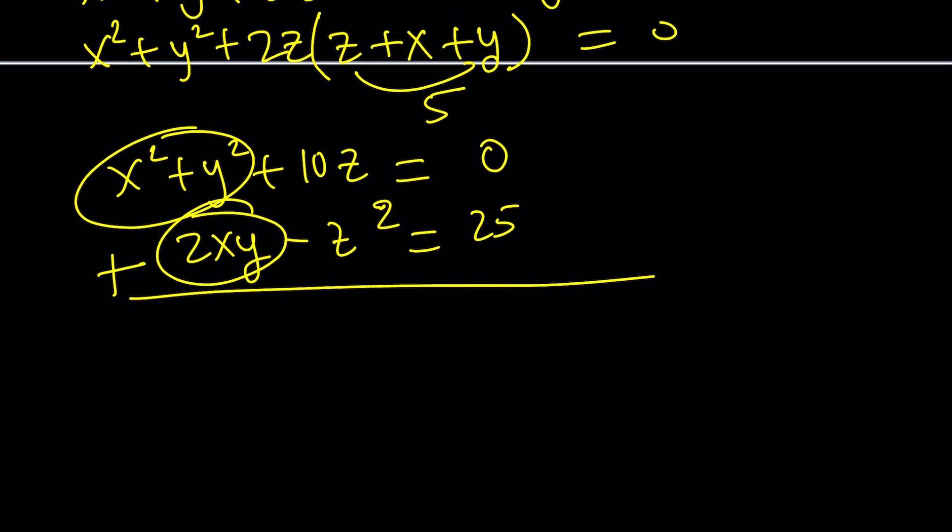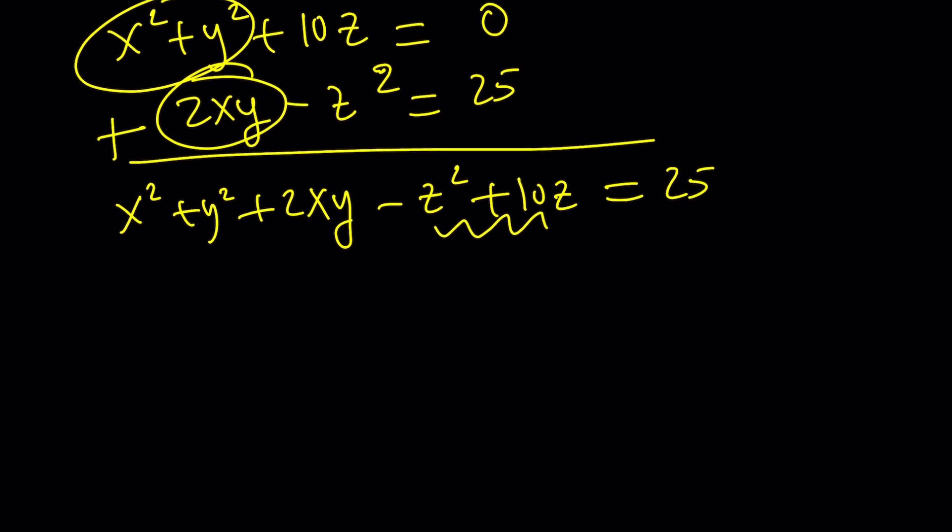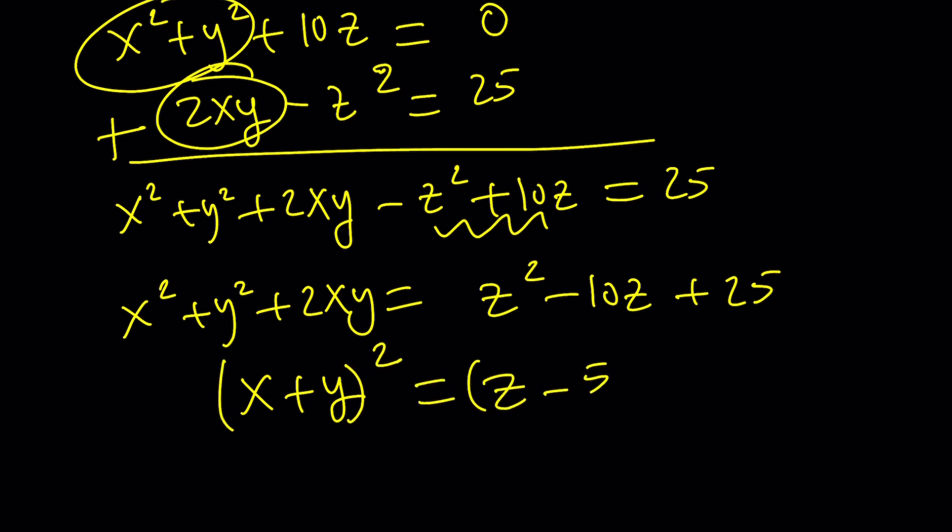Let's go ahead and add them. And we're going to get x squared plus y squared plus 2xy minus z squared plus 10z equals 25. Now let's go ahead and put this on the right-hand side. So it's going to be x squared plus y squared plus 2xy equals z squared minus 10z plus 25. And yes, this is helpful.